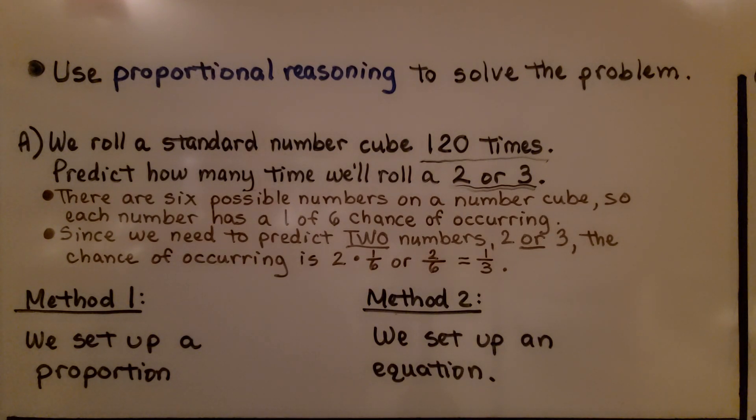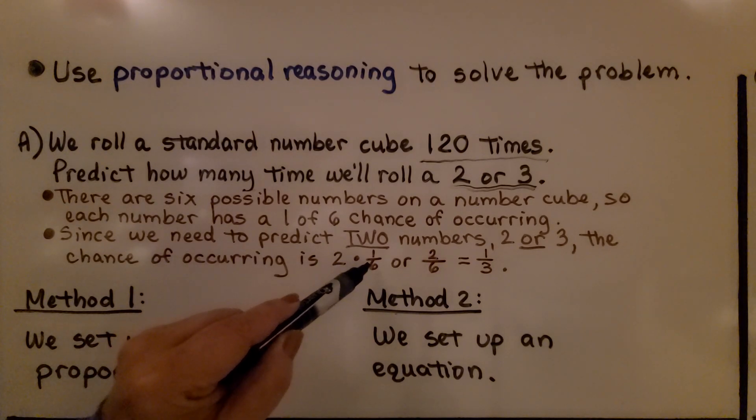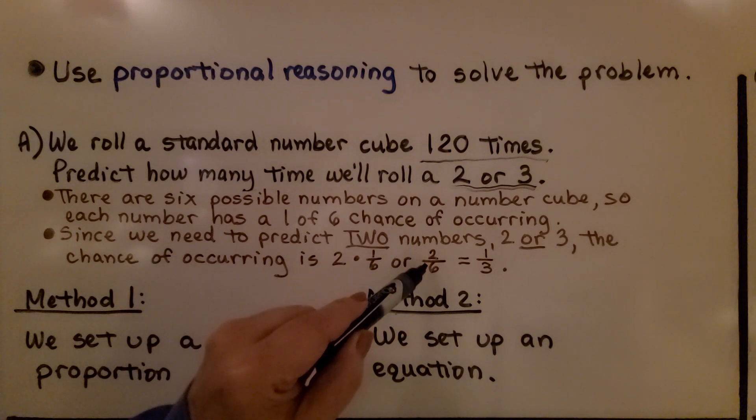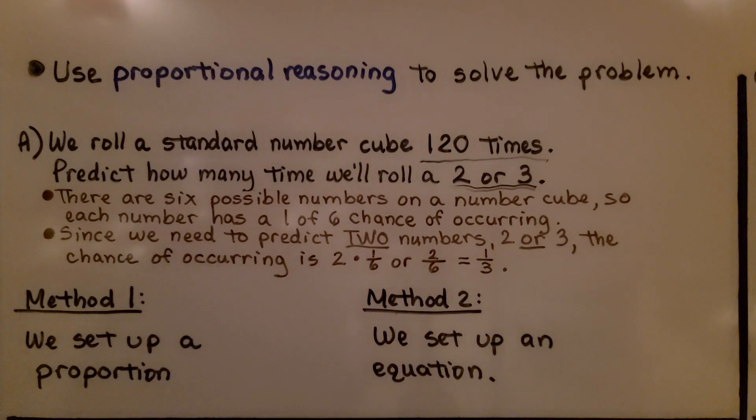so each number has a 1 of 6 chance of occurring. Since we need to predict 2 numbers, 2 or 3, the chance of occurring is 2 times 1/6, or 2/6, which can be simplified to 1/3.